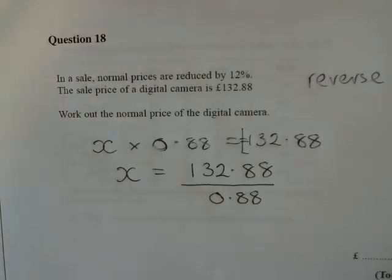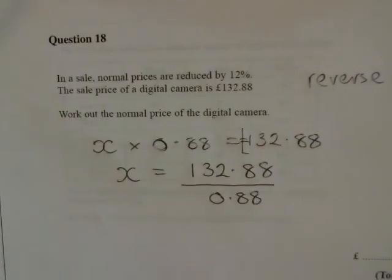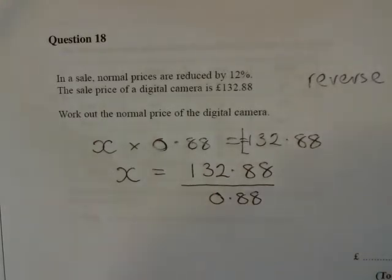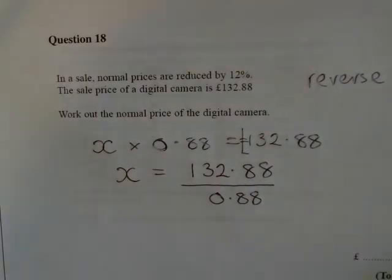The common mistake is to multiply it like you're finding a percentage and go wrong at that point. So I'll just grab my calculator. 132.88 divided by 0.88 equals £151.